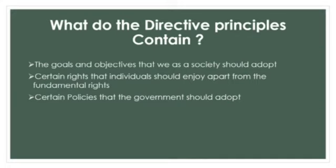They passed several Zamindari Abolition Bills under the guidelines of these directive principles. Banks were nationalized, numerous factory laws were enacted, minimum wages were fixed, cottage and small industries were promoted, and provisions for reservation for the upliftment of the Scheduled Castes and Scheduled Tribes were made. Such efforts to give effect to the directive principles include the Right to Education and formation of Panchayati Raj institutions all over the country.